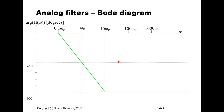At ω = ω_p the phase difference is −45 degrees. We use 0.1·ω_p as the approximation for where the phase transfer is 0 degrees, and above 0.1·ω_p we apply the asymptotic slope. For all frequencies above 10·ω_p, we assume a phase shift of −90 degrees.